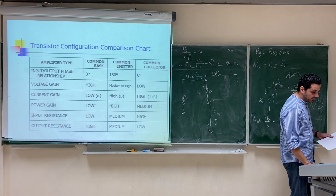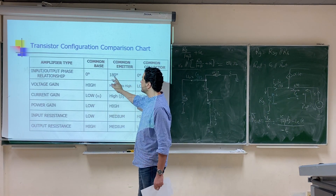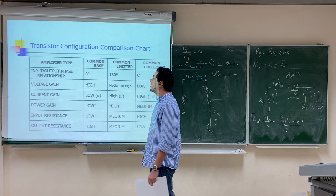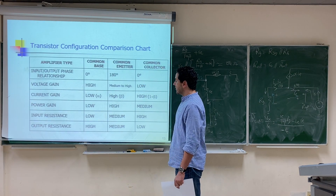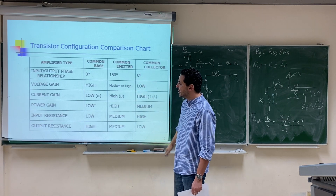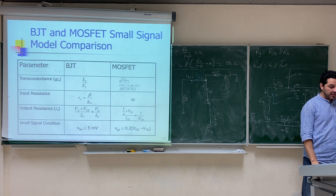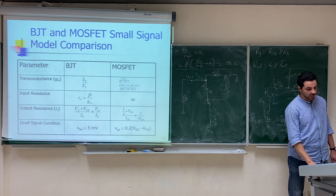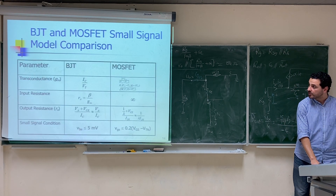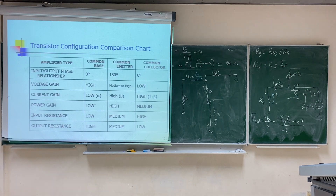In the slides you will find a comparison between the different amplifier families. For example, the common emitter is the only amplifier that gives you a negative gain with 180° phase shift, while the other two families give 0° phase shift. There is a table comparing voltage gain, current gain, input resistance, and output resistance for each family. The parameters for the next transistor type — the MOSFET — will be explained later. See you in the next video with a new topic.